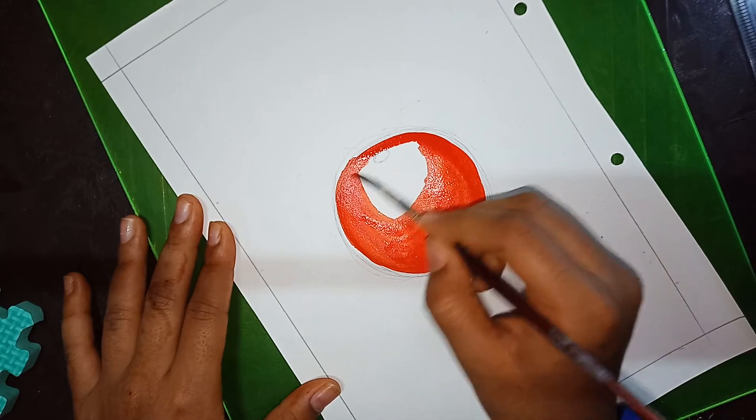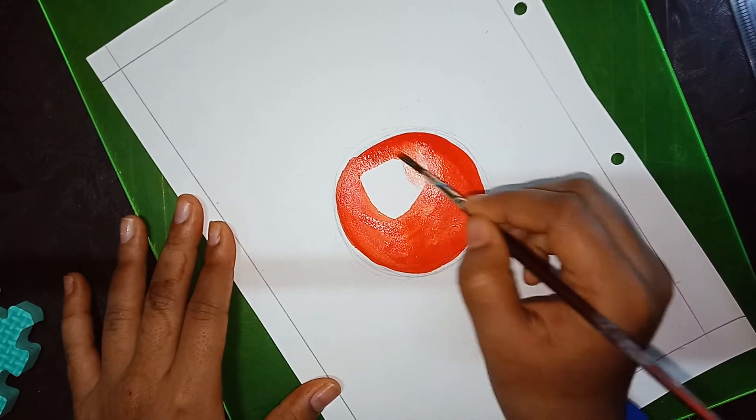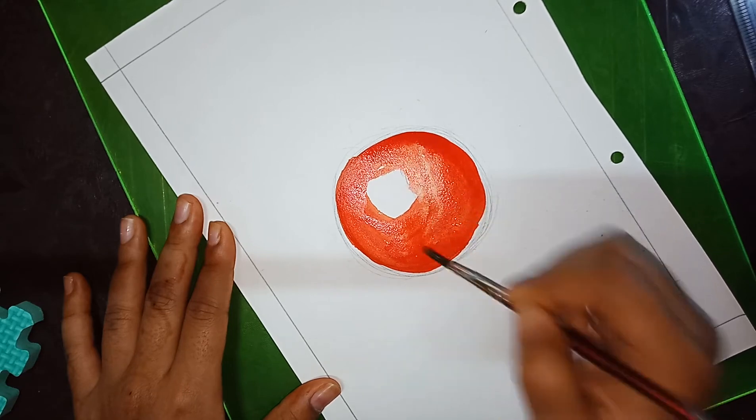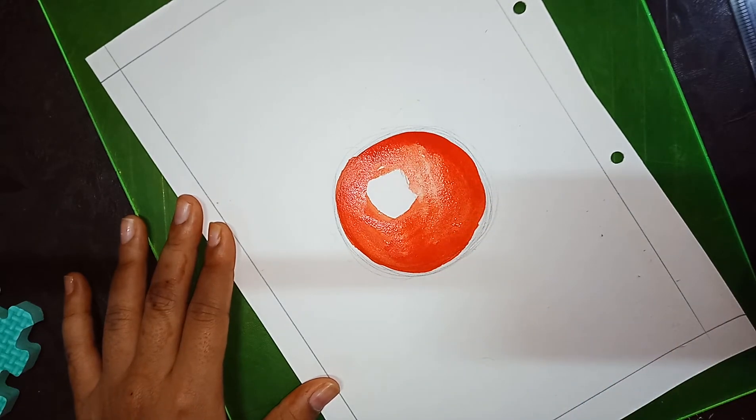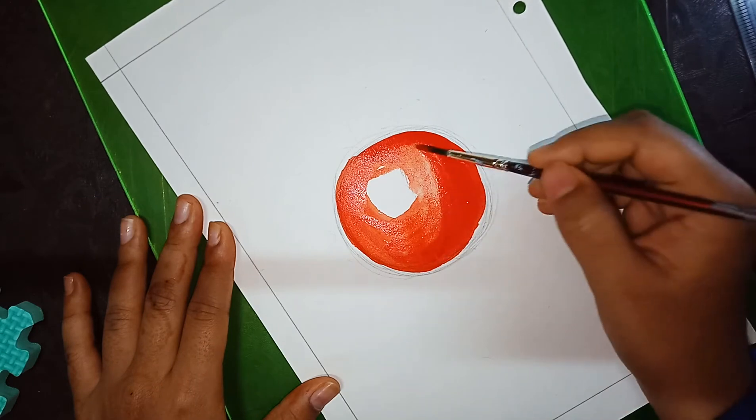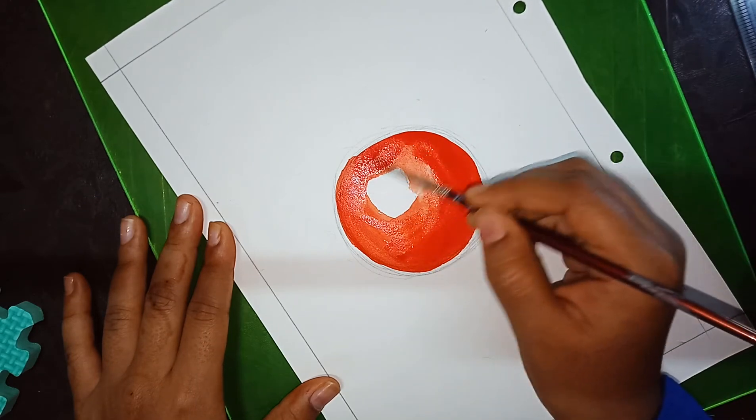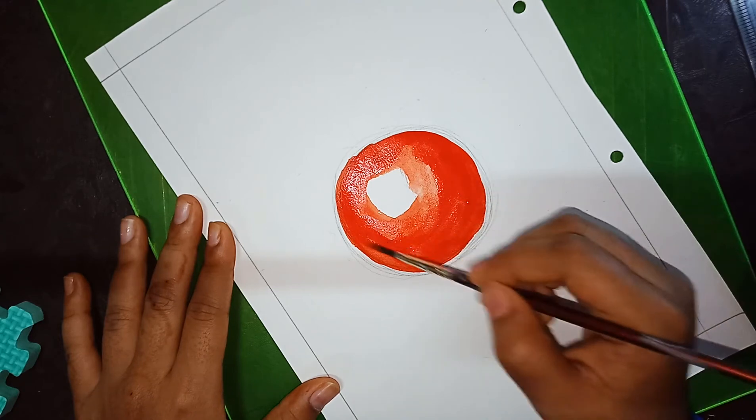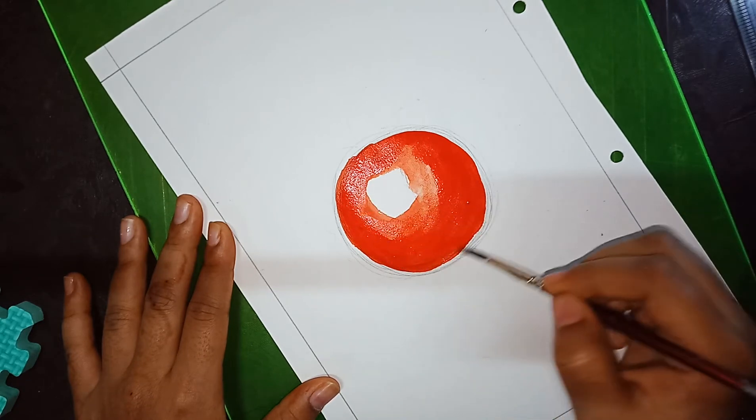It depends where your light comes. My light is here, so I am giving a light shade here. If the tomato has green color, you have to add green color.